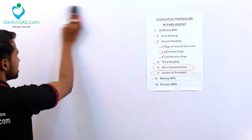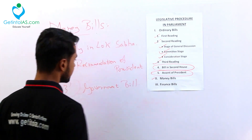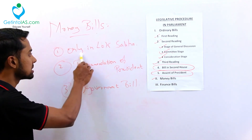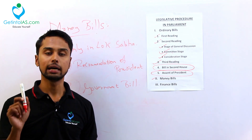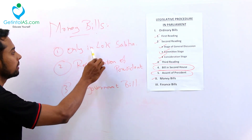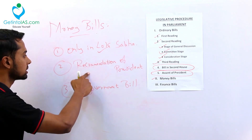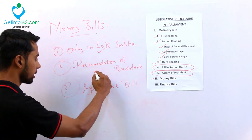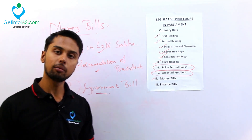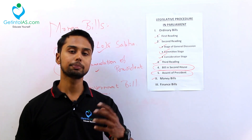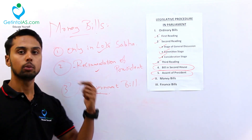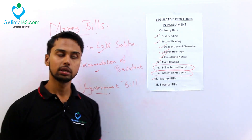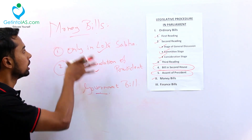Now we will see a very important thing - the speciality of the money bill. These are the special conditions for a money bill. First: money bill can only be introduced in Lok Sabha, not in Rajya Sabha. Rajya Sabha has nothing to do with introducing a money bill. Second: only with the recommendation of the president can a money bill be introduced. Third: money bill is a government bill - only a minister can introduce a money bill, not a member of parliament. These are the three important things for your money bills.